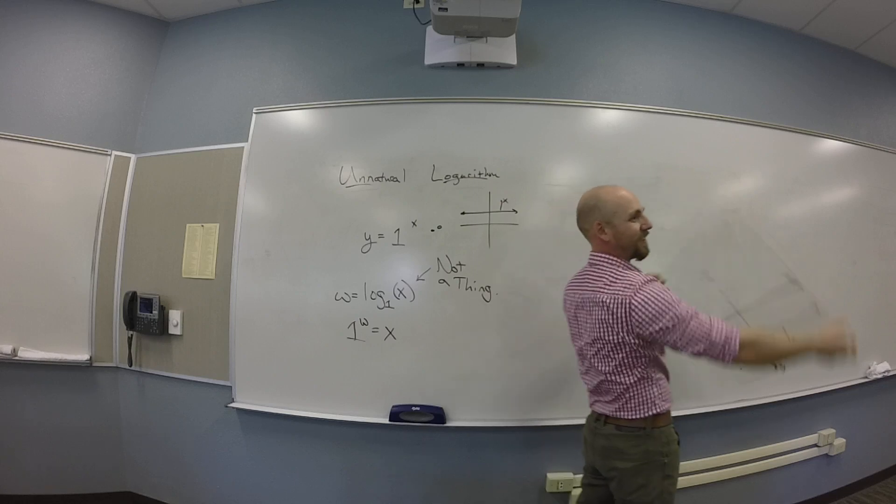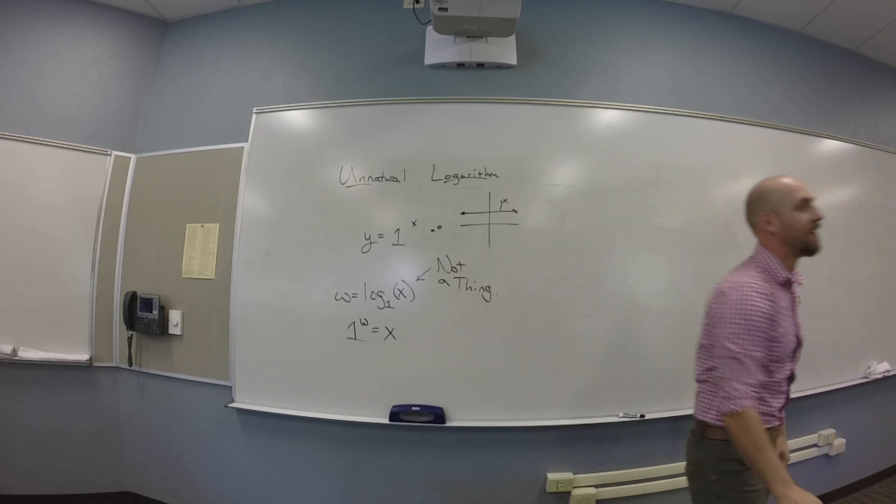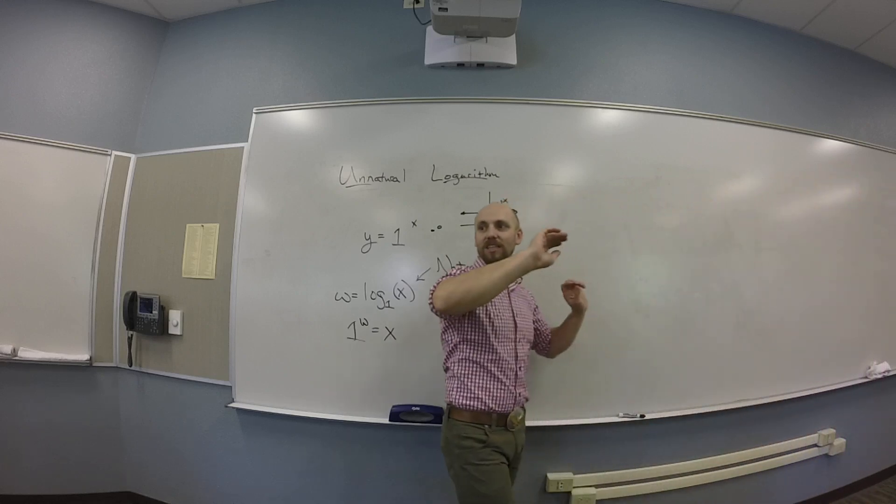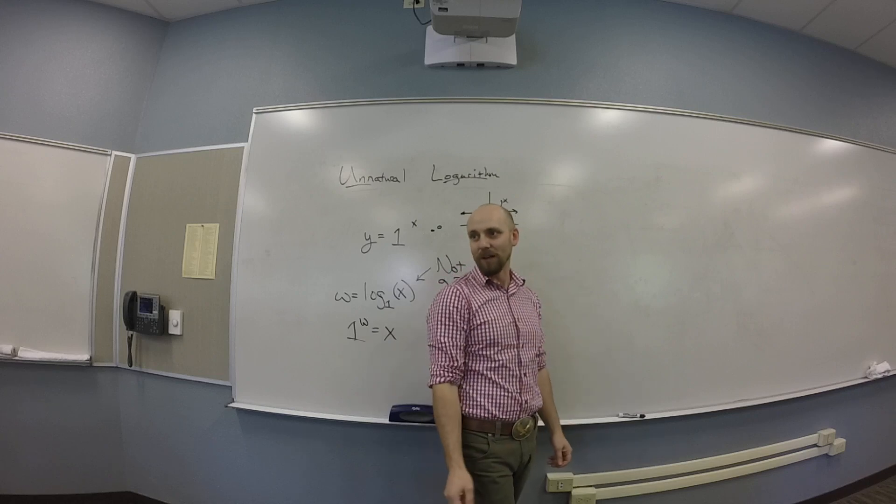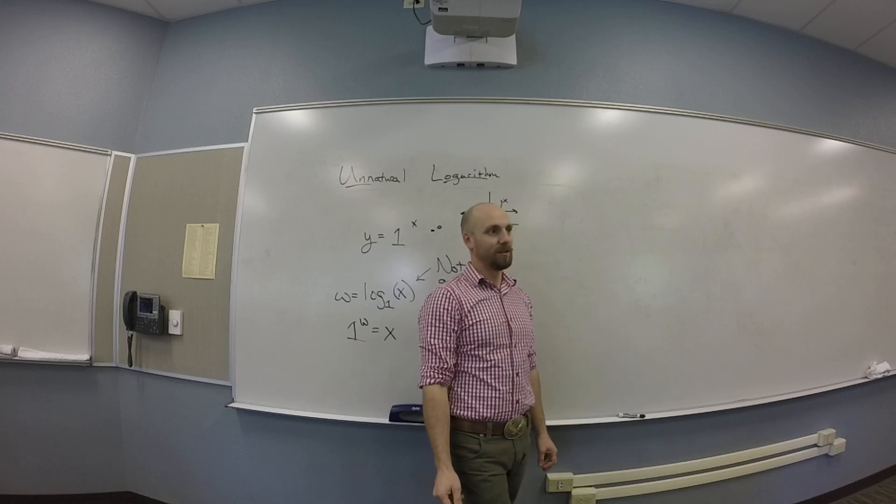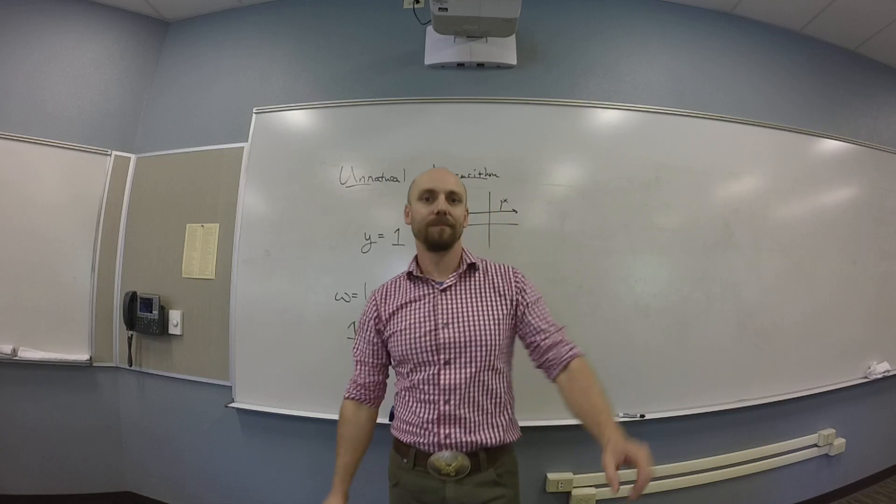Which is why the horizontal line test is a thing. You guys see that? The horizontal line test is really just running the vertical line test on the graph you get after you flip it. That makes sense. You guys cool with that?